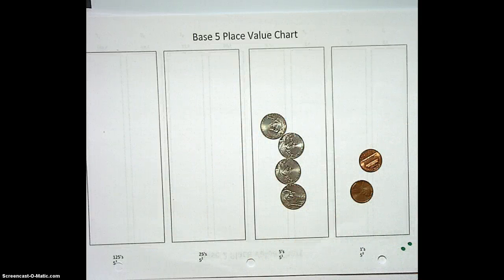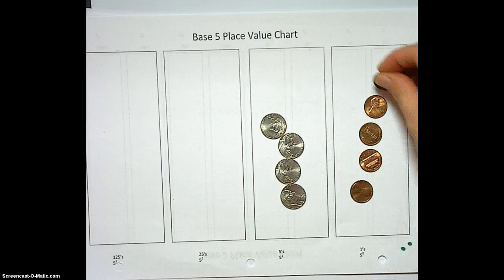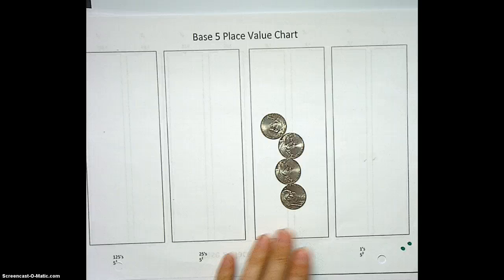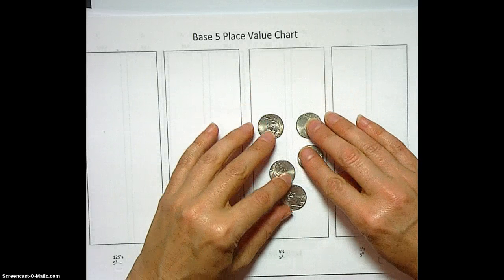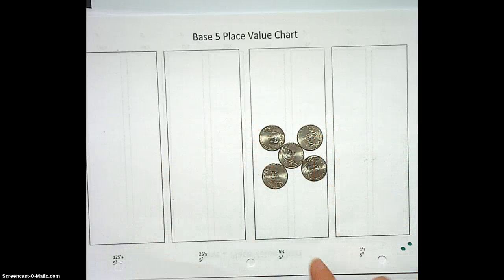4, 1, 4, 2, 4, 3, 4, 4. Well, I want to say 5, 0, trade in, but we can't do that, right, because now we have this group of 5. Okay, let's make it look like a group of 5. So what do we do now?